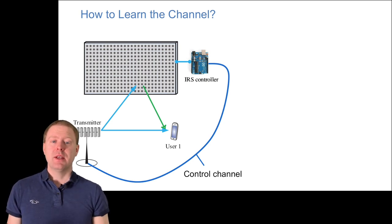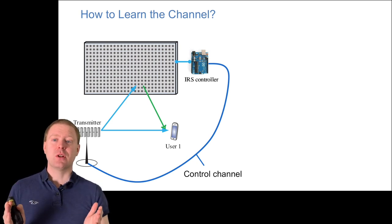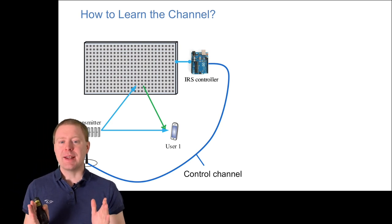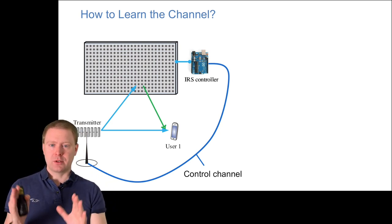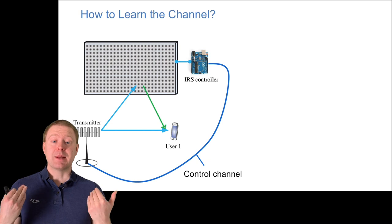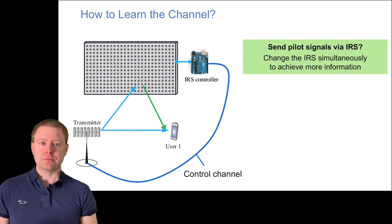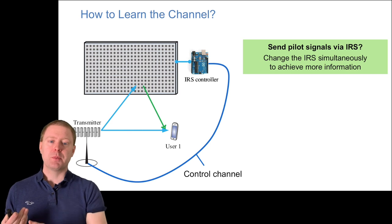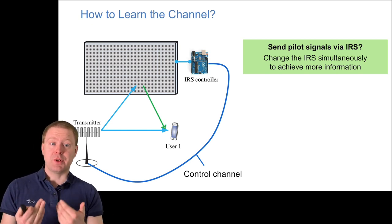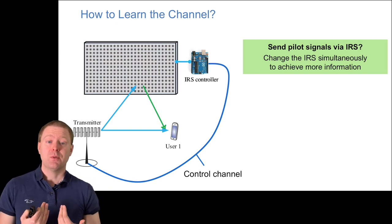Of course to set this phase shift properly, we need to know the channel. How can we learn that? Most literature assumes they are known with just some initial thoughts on how to learn them. The main idea: you have an IRS controller that can control the surface and all these θ_n values. The transmitting base station array might have a control channel to the IRS controller. Maybe we send pilots from user to transmitter via the IRS, and you change the IRS simultaneously so you can measure different parts of the channel to figure out how to reflect the signal best.